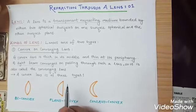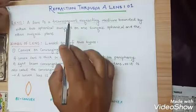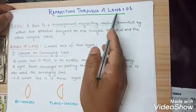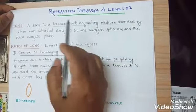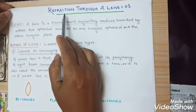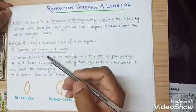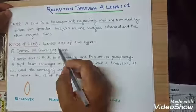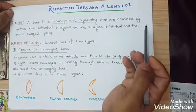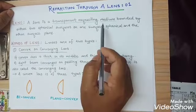Hello dear students, we will start today one new chapter: refraction through a lens. Refraction is a phenomenon of bending of a ray of light when it passes from one transparent medium to another transparent medium — that is refraction.